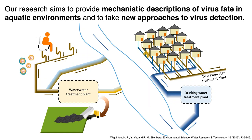In this urban water cycle, viruses enter sewage from humans, go to the wastewater treatment plant, or bypass it in an overflow event. Even within the wastewater treatment plant, studies show viruses can make it through in an infective state. That water is then picked up downstream as a drinking water source. Because detection is so difficult, it's very useful to know something about the mechanistic fate of viruses through these treatment processes so we can predict — using virus characteristics — how they might behave.